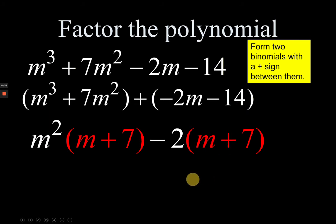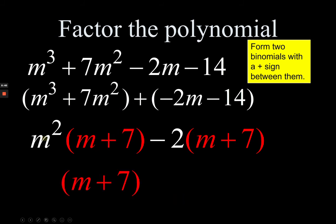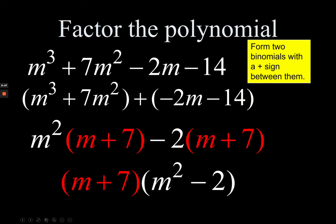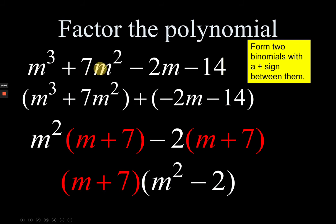Now the common factor between both sets of terms is (m + 7). Write it in front, and (m² - 2) is combined in another parenthesis. The final answer — a product of two binomials — is (m + 7)(m² - 2). We were able to factor m³ + 7m² - 2m - 14 using factoring by grouping.